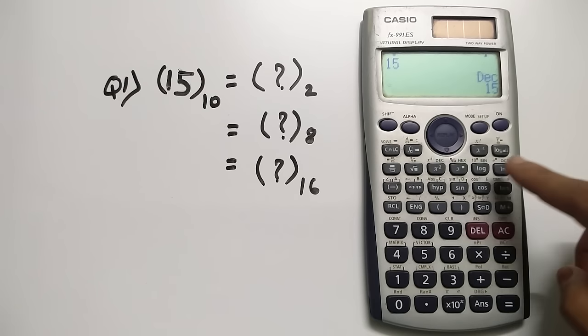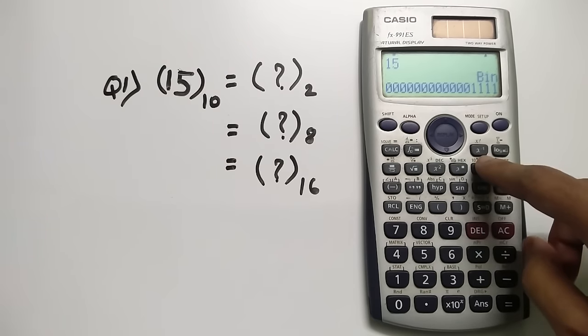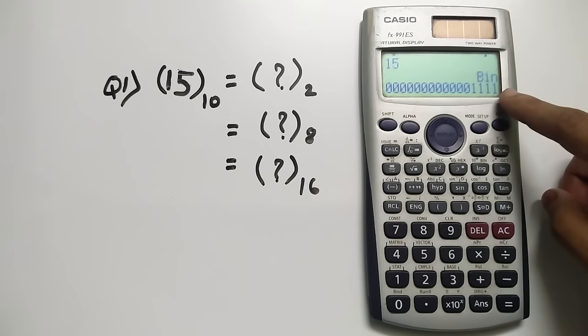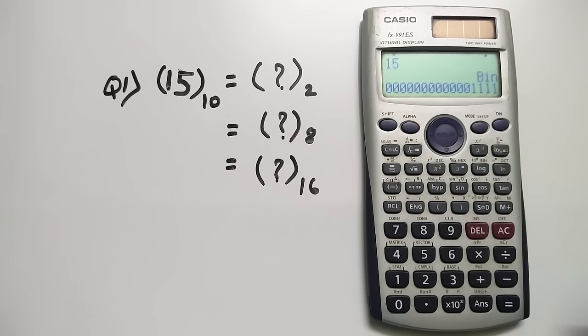So to change it to binary I'll click this button and as you can see it's showing a long number but we are only interested in the four digits starting from the right so it is 1111. And you know the zero value in the MSB is irrelevant, so it's just because of this format of this calc showing those values.